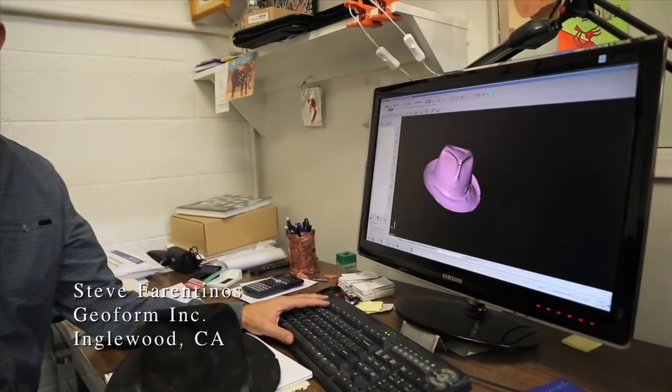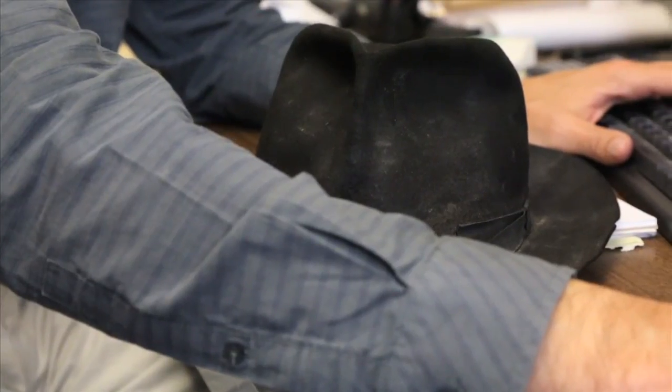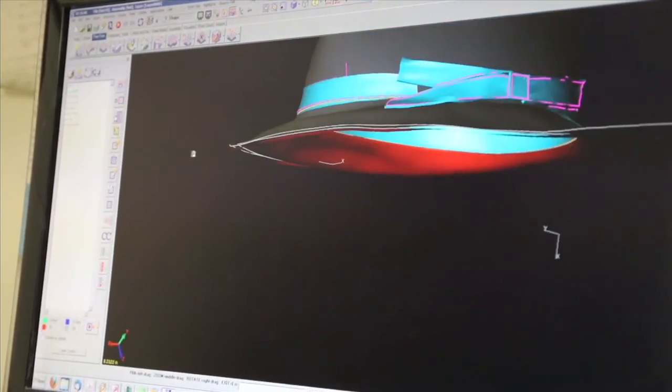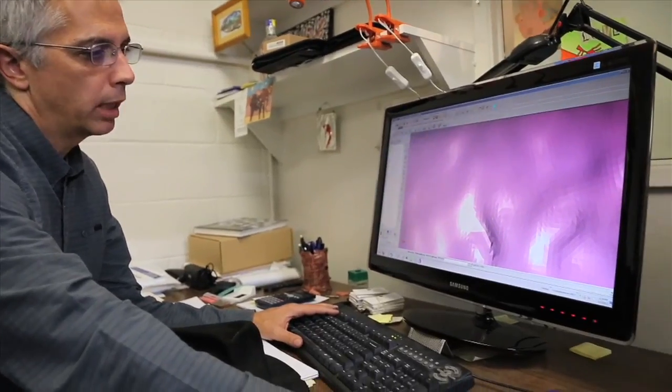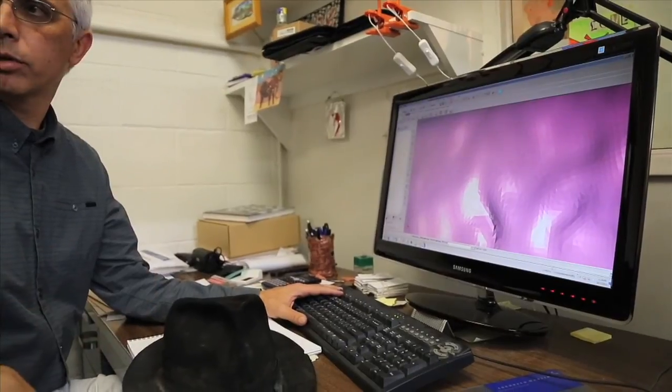That's the original scan. Okay. Showing all the bumps and bruises. What the scanner is doing is it sees a high point here and it's blending out. Right. Whereas in reality there's just a hair sticking up or something. I see.